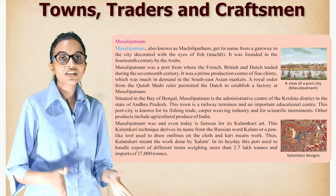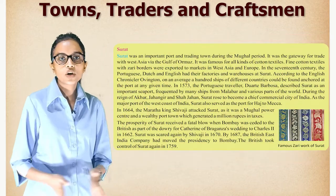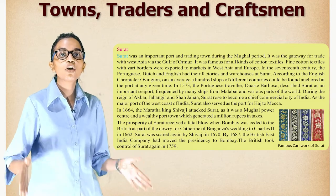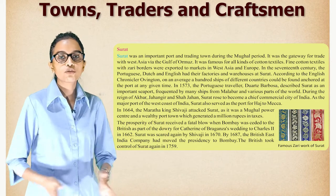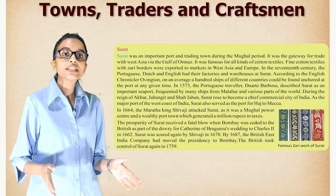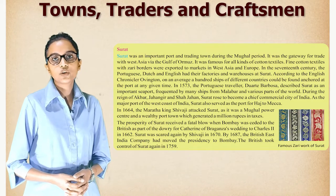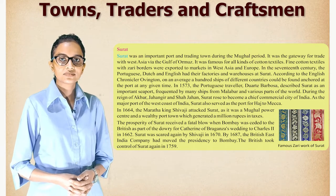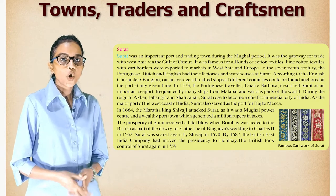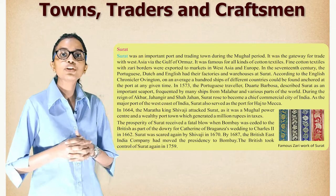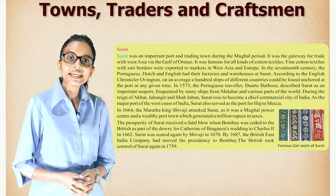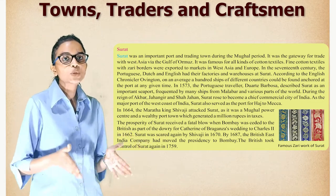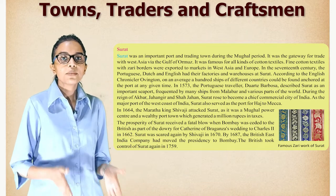Surat was an important port and trading town during the Mughal period. It was the gateway for trade with West Asia via the Gulf of Oman. It was famous for all kinds of cotton textiles — fine cotton textiles with zari borders were exported to markets in West Asia and Europe. In the 17th century, the Portuguese, Dutch, and English had their factories and warehouses at Surat. According to the English chronicler Ovington, on average a hundred ships of different countries could be found anchored at the port at any given time.